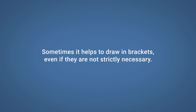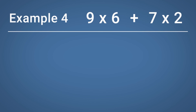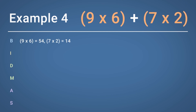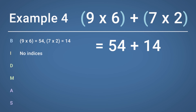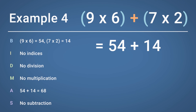Sometimes it helps to draw in brackets, even if they are not strictly necessary. For example, calculate 9 multiplied by 6, add 7 multiplied by 2. In this example, as we have two multiplications to calculate, it may be helpful to draw in brackets. So now we have brackets; following BIDMAS, we first start by completing the sums inside the brackets. 9 multiplied by 6 equals 54, and 7 multiplied by 2 equals 14, leaving us with 54 add 14. There are no indices, divisions, or multiplications left, so all that is left is to carry out the addition. 54 add 14 gives us a final answer of 68.